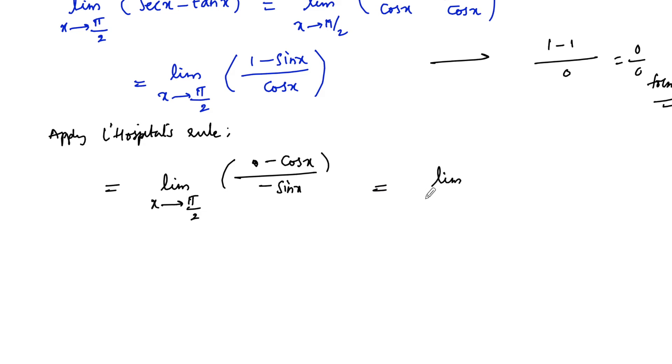Which is limit x tends to π/2, cos x over sin x. So which is cot x. As x tends to π/2, cot x is nothing but 0.